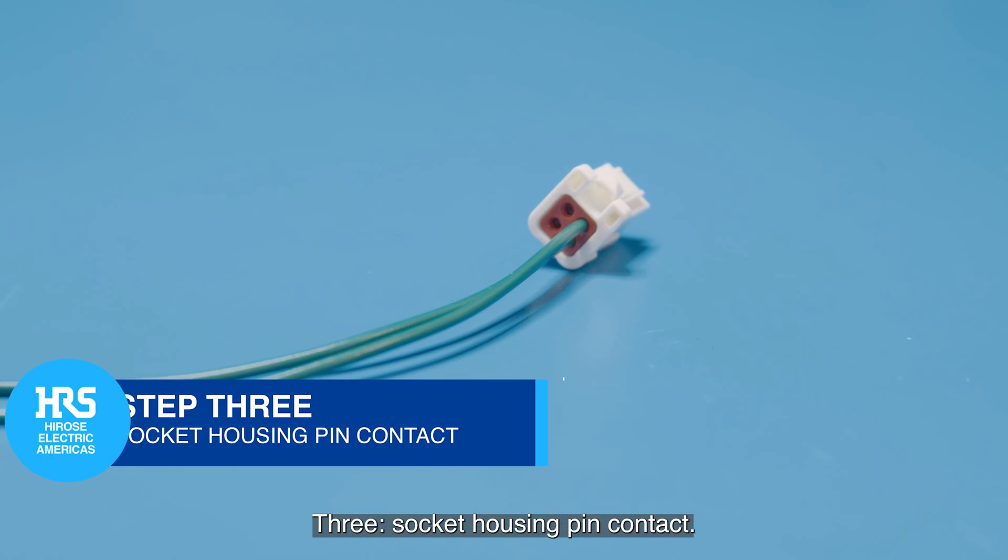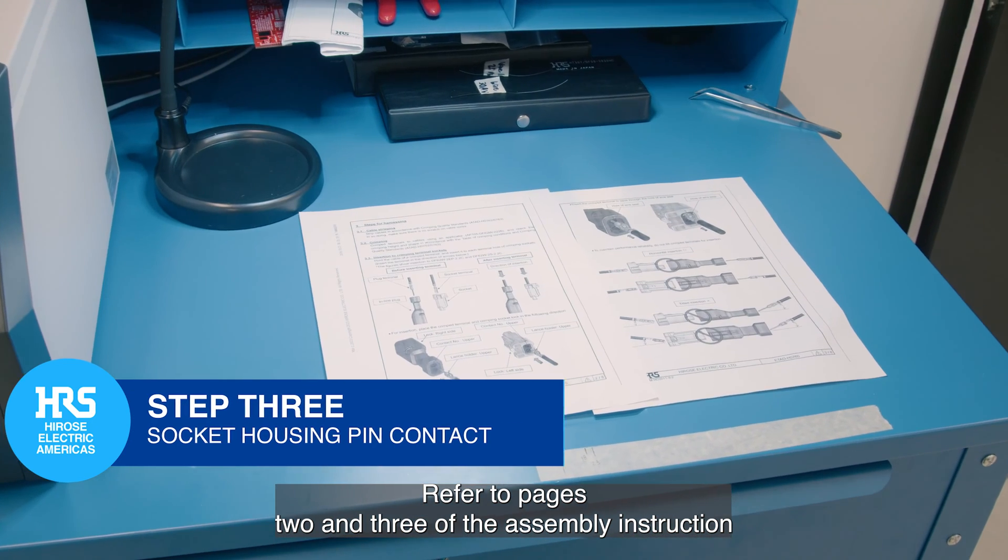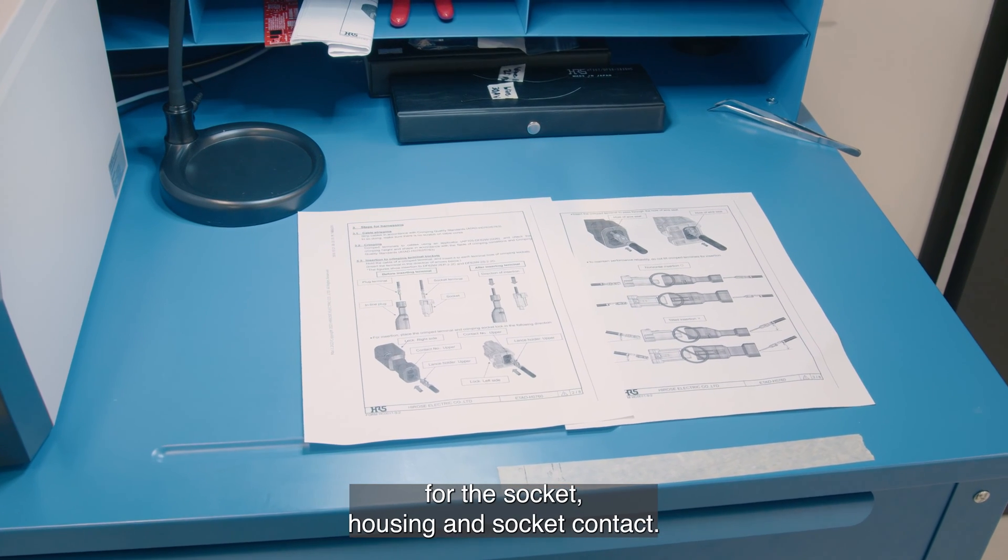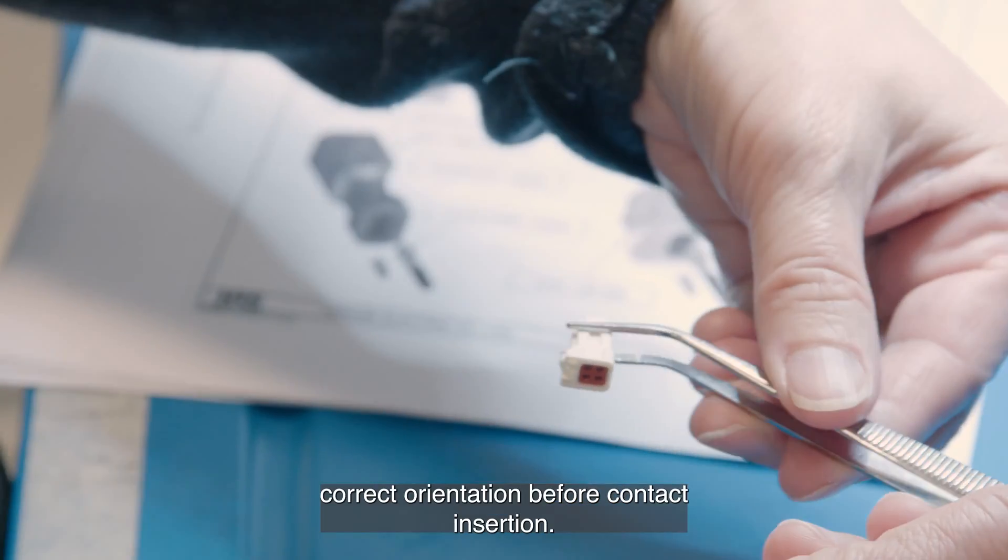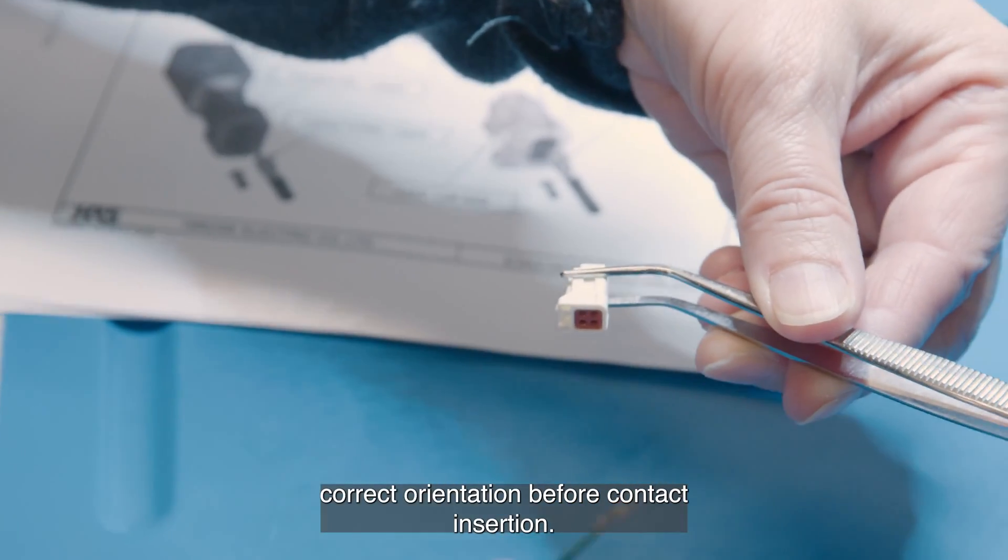3. Socket Housing and Contact. Refer to pages 2 and 3 of the assembly instructions for the socket housing and socket contact. Ensure correct orientation before contact insertion.